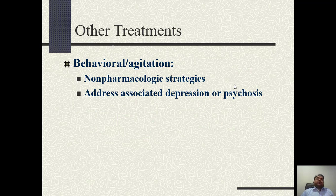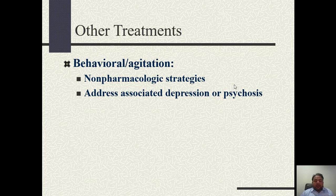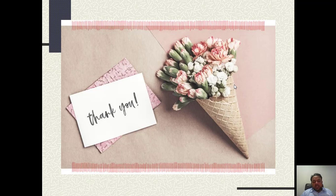Other treatment options: concomitant depression or psychosis should be addressed. Eating habits should be maintained because patients with dementia can worsen due to dehydration, so patients should be prompted to take adequate amounts of water. Patients may also decline due to decreased eating, or may die due to contractures and bedsore formations. In advanced dementia, proper nursing care should be done, and all other contributing factors should be addressed.